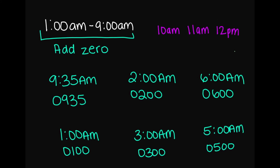For 10 a.m., 11 a.m., and 12 p.m., you do not need to include the 0 in front of the hour. So for 10 a.m., military time is going to be 1000 hours. For 11 a.m., it's going to be 1100 hours. And then for 12 p.m., this is going to be 1200 hours.